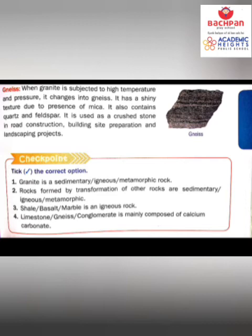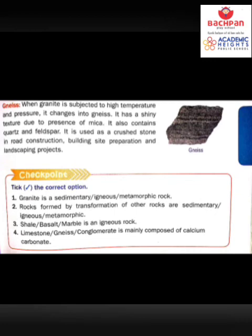Let's talk about gneiss. When granite — an igneous rock — is subjected to high temperature, it changes into gneiss. It has a shiny texture due to the presence of mica in it. It also contains quartz and feldspar. It is used as a crushed stone in road construction, building site preparation, and landscaping projects. Gneiss is generally grey in color.